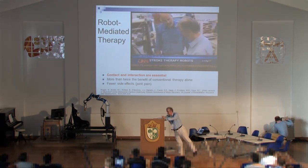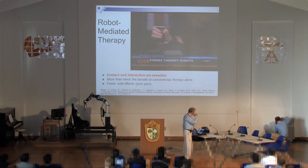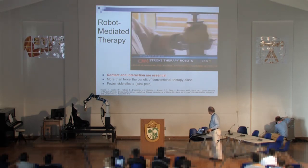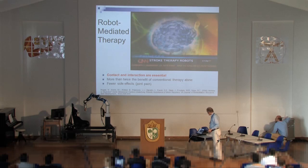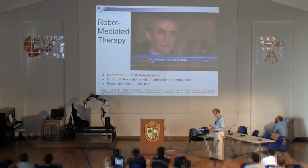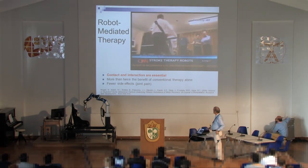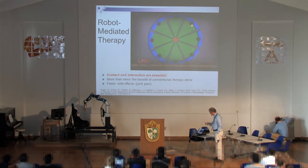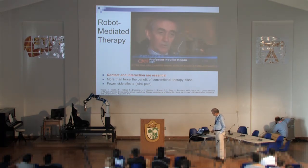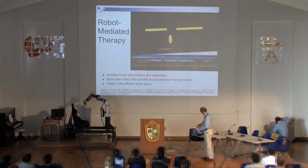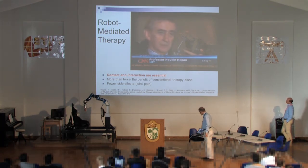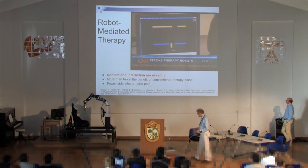MIT scientists Hermano Igo Krebs and Neville Hogan are using robots to help stroke victims with brain injuries regain movement. Their arm robots have already helped patients move shoulders and wrists, enabling them to do things like shower or put on clothes. They're now focusing on lower extremities with ankle bots, which they hope will help patients walk again and avoid dangerous falls. The robots provide a video game on screen prompting exercises — if the patient doesn't move in time, the robot initiates the movement; if they do move, the robot assists.